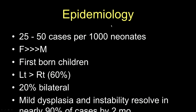Hip dysplasia is a relatively common disorder. The epidemiology is 25 to 50 cases per 1,000 neonates, and of course it changes geographically. It's much more common in females, more commonly seen in firstborn children. Interestingly, the left hip is more frequently involved and 20% of the cases are involved bilaterally. But mild dysplasia and instability resolve in nearly 90% of the cases by two months.